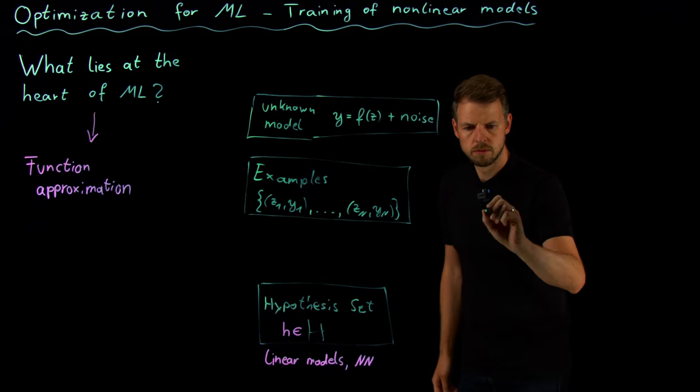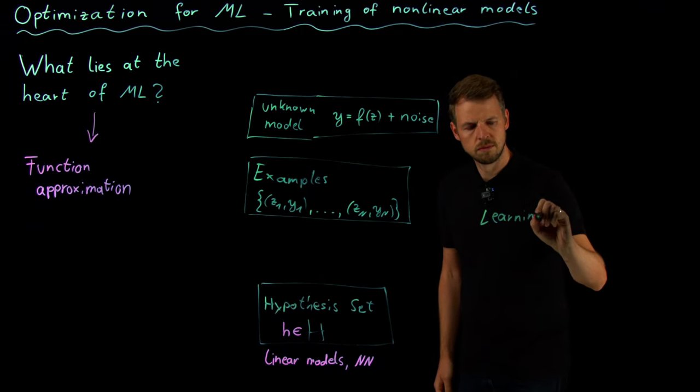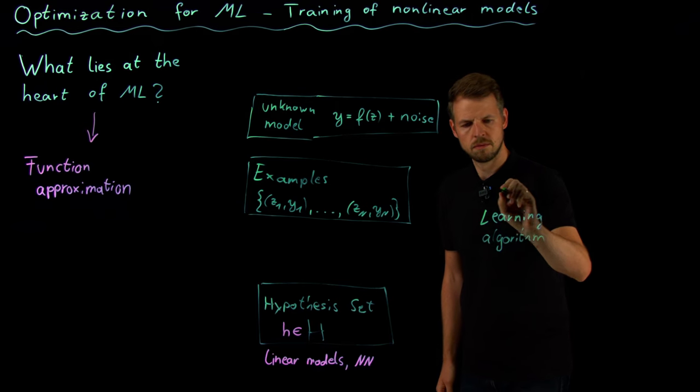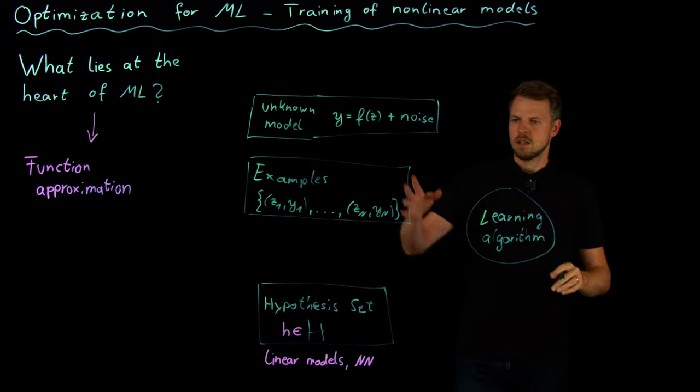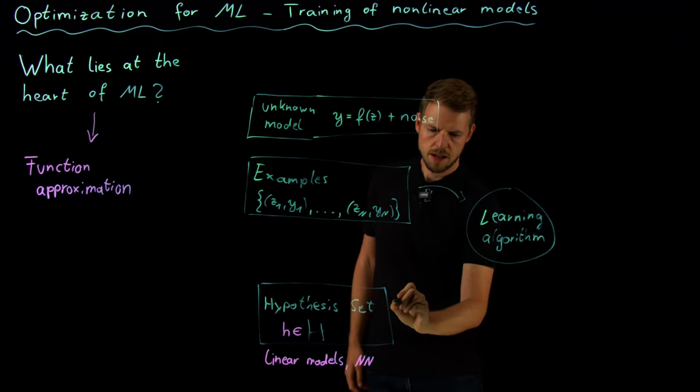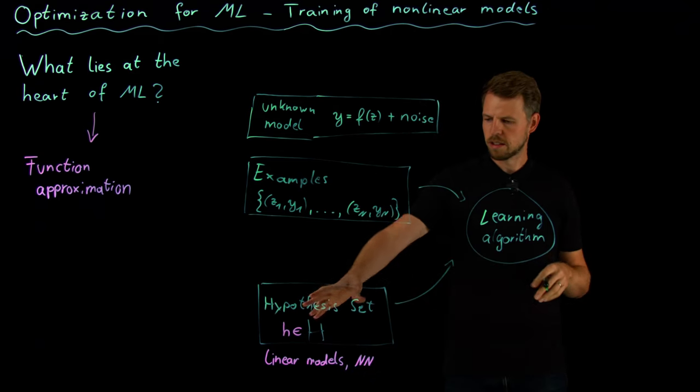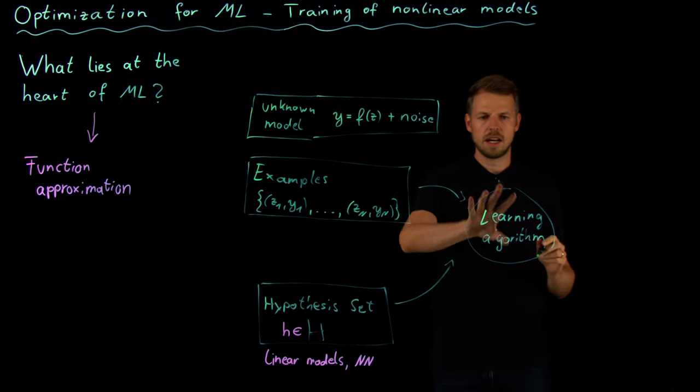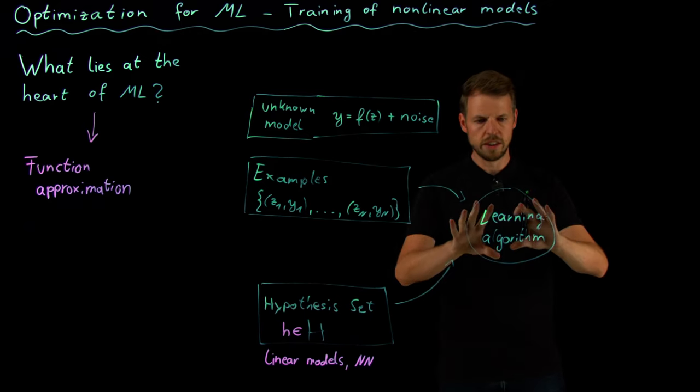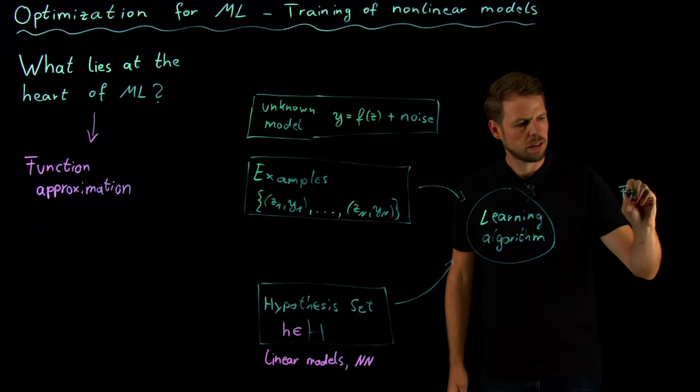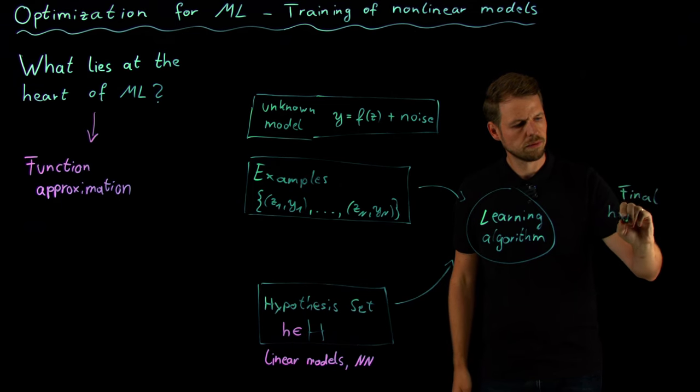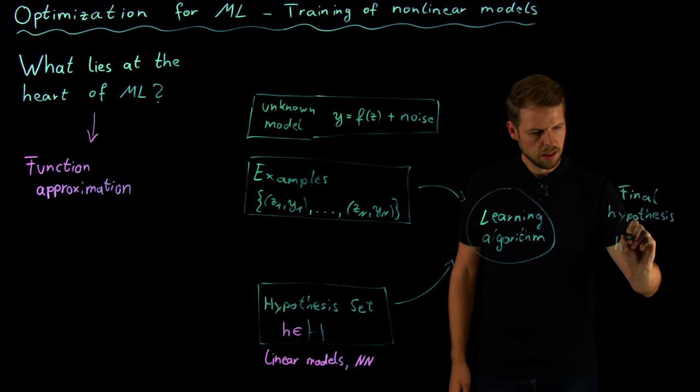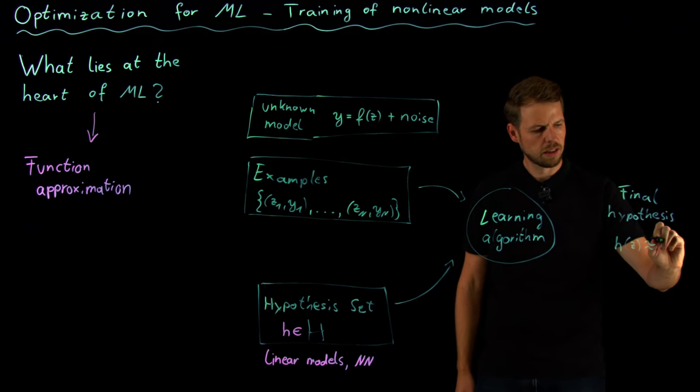What we need in the next step is we need a learning algorithm. This means we take the data and we say okay, let's not work in thin air but let's try to find the particular h out of this hypothesis set that does the best job for us. And then after the learning algorithm has done its magic—let's say we're going to go into the details of what this is about—we arrive with our final hypothesis. So this is my final h of z which is approximately our f of z.